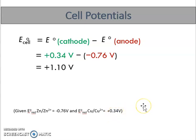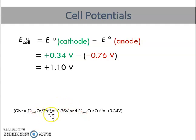Remember from the first video: the more positive the standard reduction potential, the more likely that half-cell will undergo reduction and act as the cathode. Based on this, Cu/Cu²⁺ has the more positive E⁰reduction, so it will be the cathode, and Zn/Zn²⁺ will be the anode.